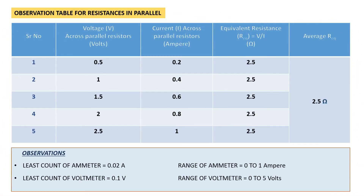Let's record our observations in the observation table. Please understand that the voltmeter will always measure the potential difference between two ends of the equivalent resistance.